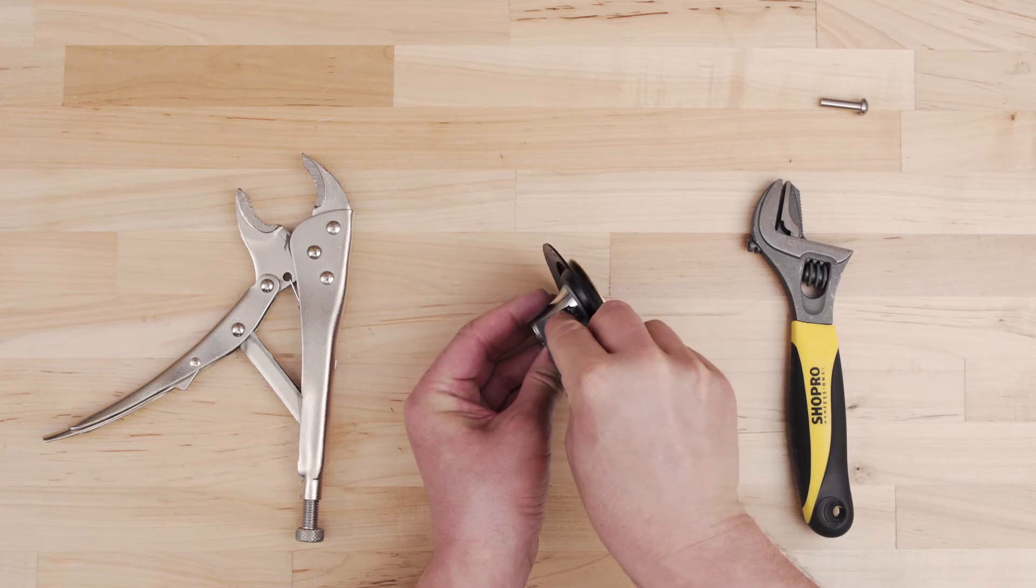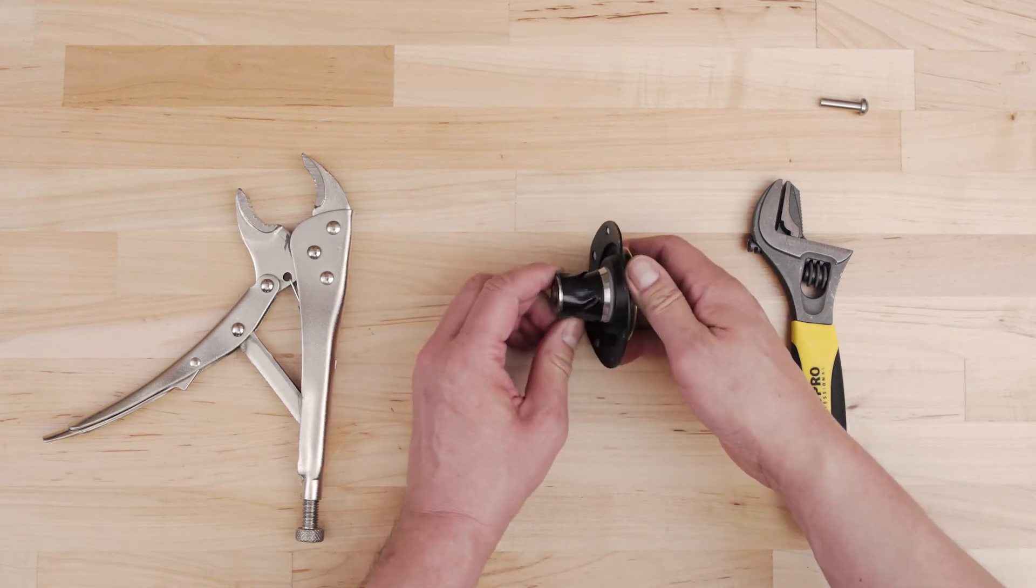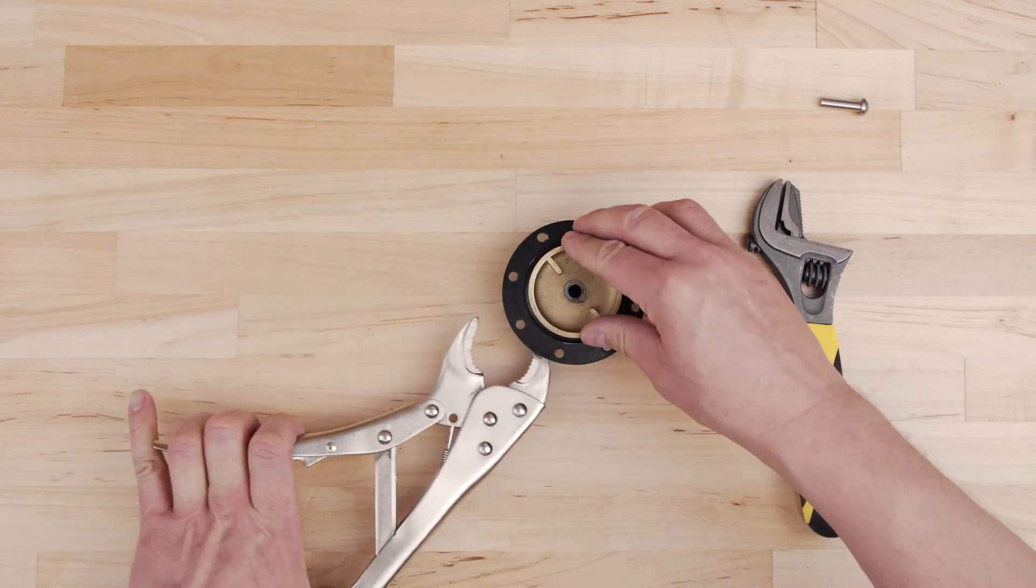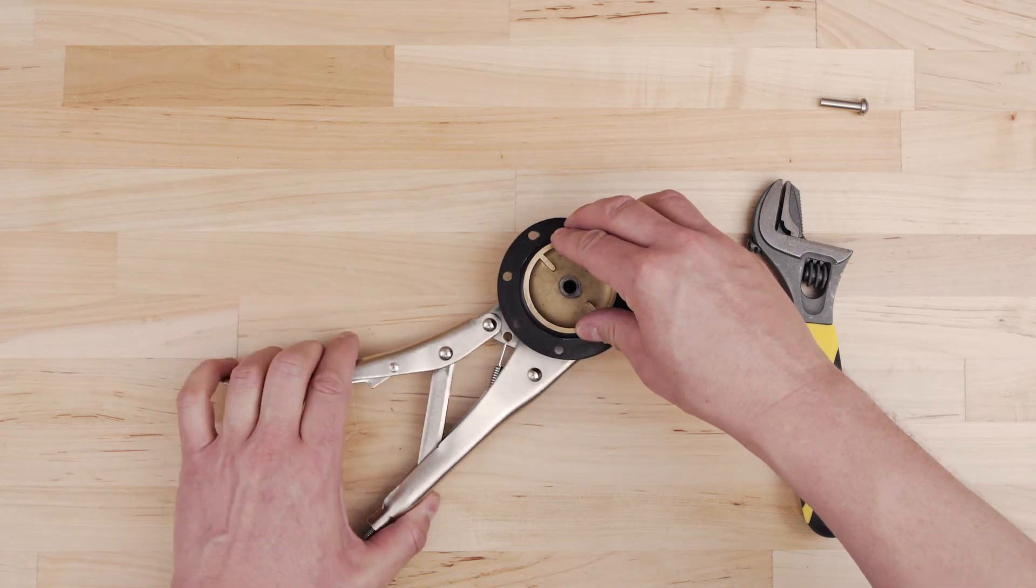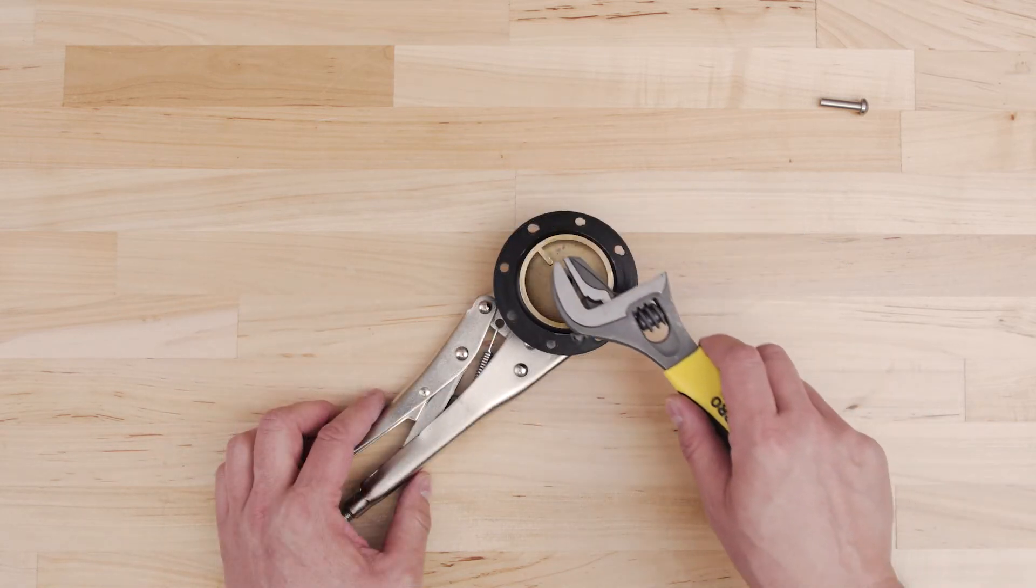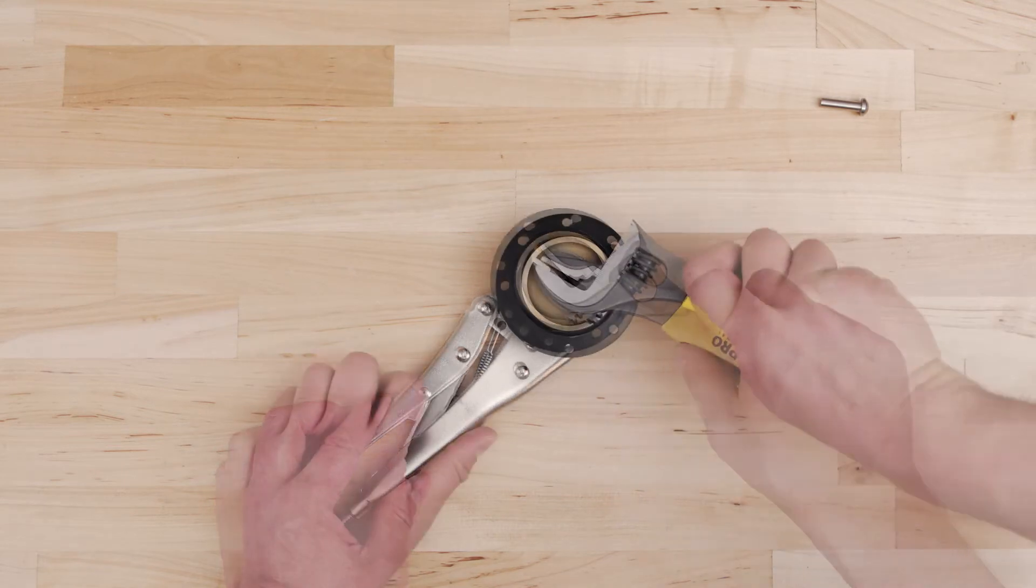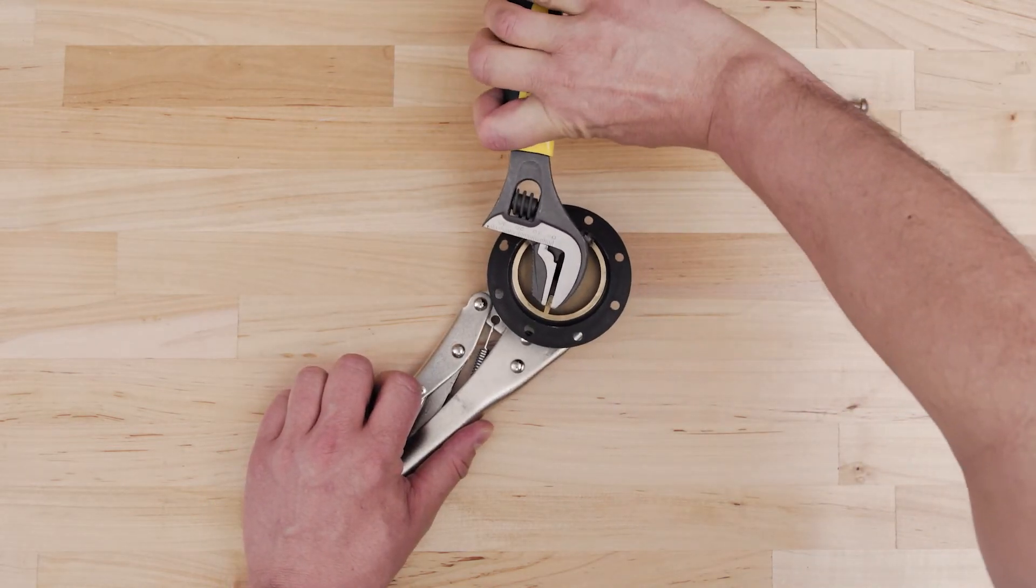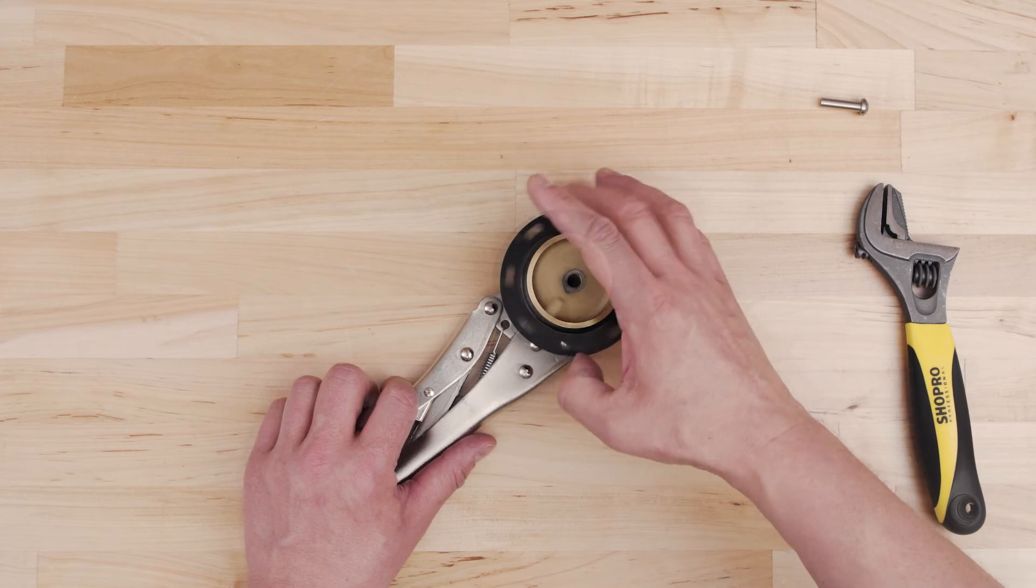First, take some duct tape and wrap it around the shank to protect it. Use a bench vise or locking pliers to secure the assembly. Now, use an adjustable wrench to grip onto one of the tabs of the brass piece. Turn counterclockwise and unscrew the pieces.